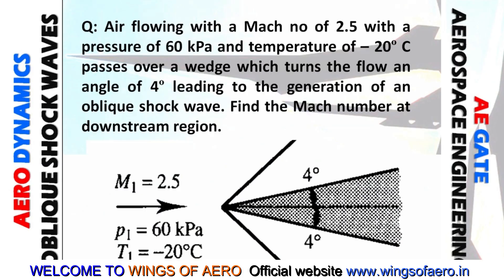Let me read the question. Air flowing with a Mach number of 2.5, a pressure of 60 kilopascal, and a temperature of minus 20 degrees centigrade passes over a wedge, which turns the flow at an angle of 4 degrees at the leading edge, leading to the generation of an oblique shock wave. Find the Mach number at the downstream.